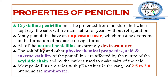The pKa value of penicillin indicates that penicillins are generally acidic in nature, with pKa values ranging from 2.5 to 3.0. However, some penicillins are amphoteric in nature.